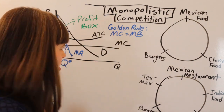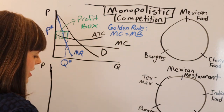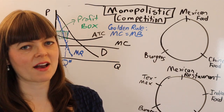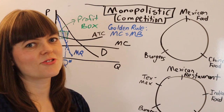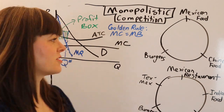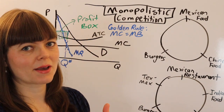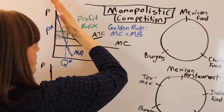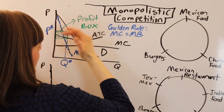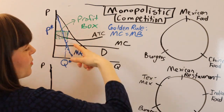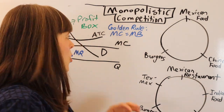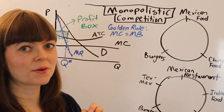We know that firms are going to enter the industry because they get jealous of that profit. When they enter, we have more and closer substitutes available for the Mexican restaurant — for example, a Tex-Mex and an Indian restaurant entering when they see that profit box. What happens to the diagram when those firms enter is that demand becomes more elastic. Since there are closer substitutes, the demand curve rotates down, and you might imagine it rotating all the way down to where it's tangent to the average total cost curve.